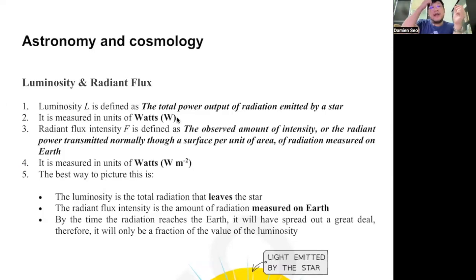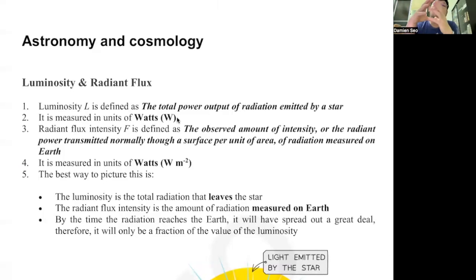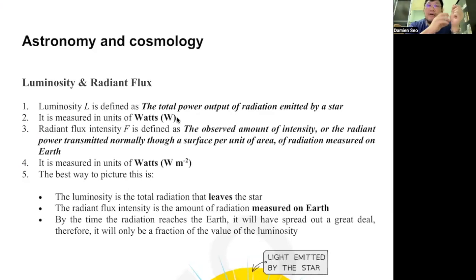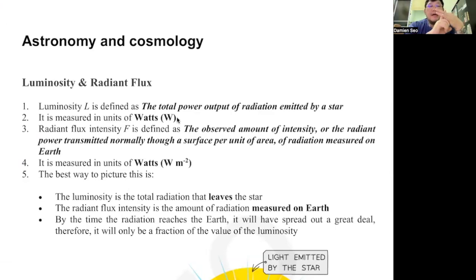What is radiant flux intensity? Radiant flux intensity is the intensity detected at the Earth due to that star. For example, the total power output of the sun is called luminosity, but the amount that reaches the Earth that we can detect is called radiant flux intensity. We are using intensity, not just power. If you remember from AS, intensity is defined as power per unit area, or energy per unit time per unit area. That is called radiant flux intensity.